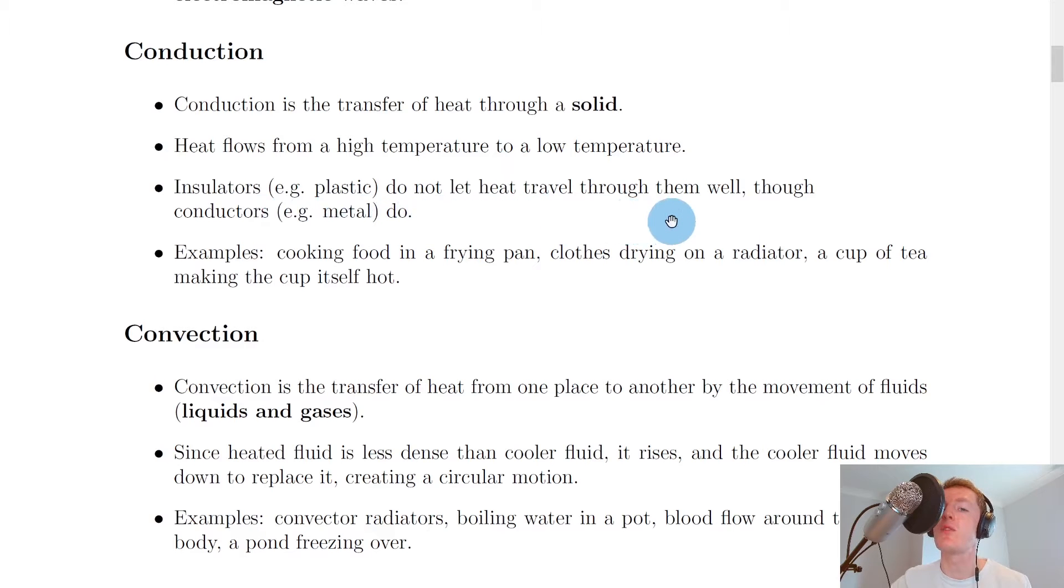Insulators, for example plastics, do not let heat travel through them well, though conductors, for example metals, do. Some typical examples of conduction might involve cooking food in a frying pan, where the contact of the food with the hot frying pan is going to cause the food to cook.